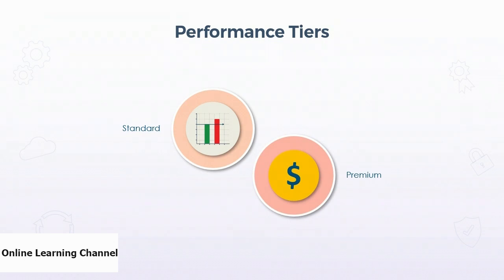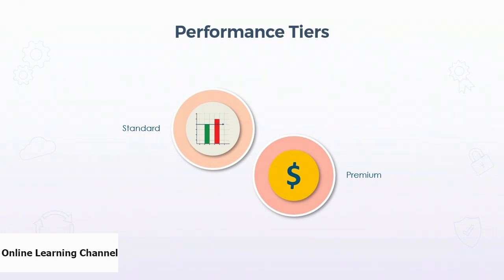The premium tier uses solid-state drives for the hardware, offering higher throughput and less latency than the standard tier. The premium tier should be used for workloads that will be read many times or have a high rate of small transactions that can benefit from improved response times. Examples include data streams, interactive workloads, high-performance computing, and data transformation processes.